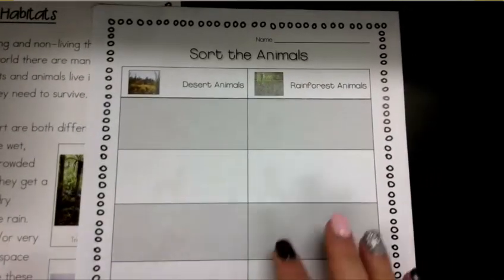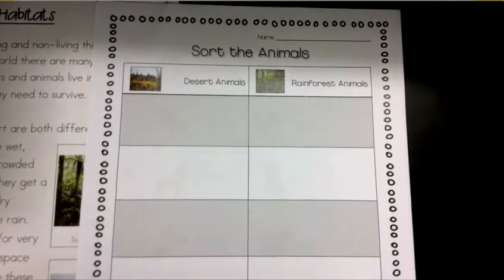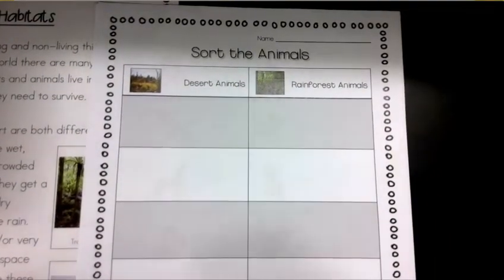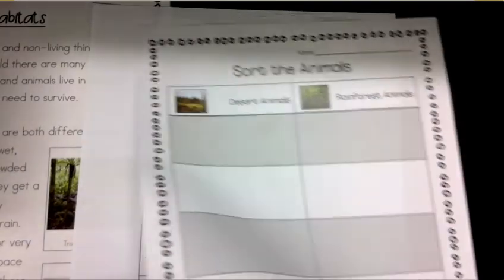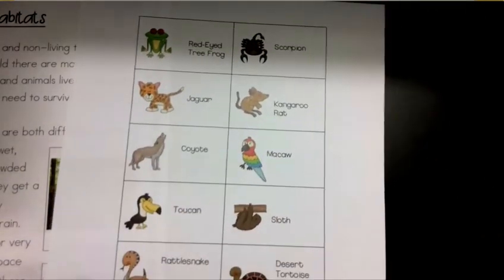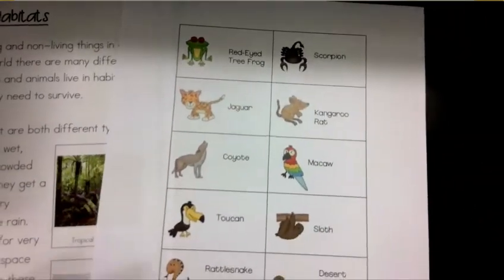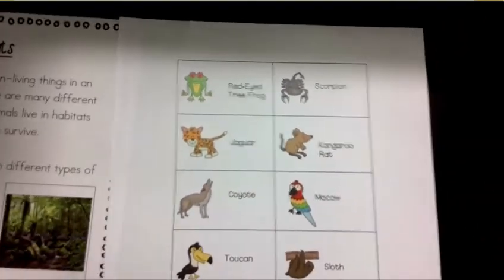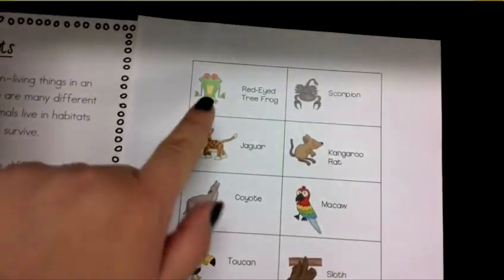Today you are going to need your sheet that says 'Sort the Animals.' You can see desert animals and rainforest animals. You also have a sheet that looks like this with the different animals.